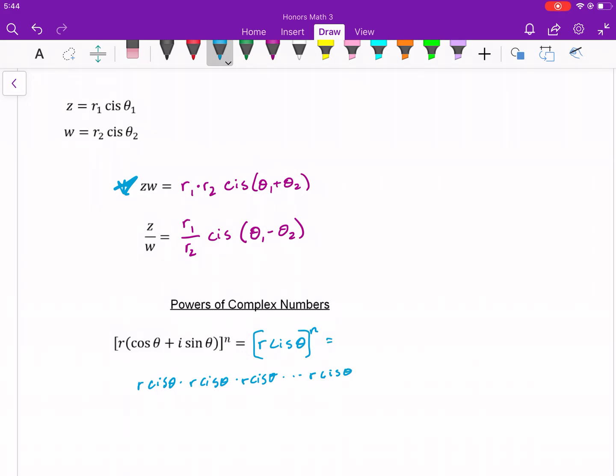So for that reason, we're going to be multiplying the r's together. You'll have r times r times r times r n times, which is the same thing as r to the n. And then you'll be adding theta together n times as well. So we'll do n times theta. And that would be the power rule.